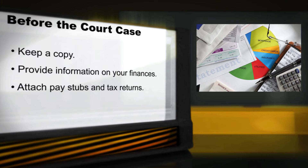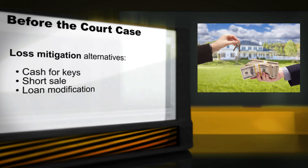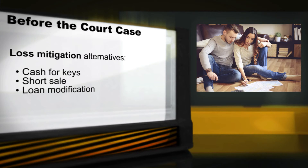Your lender will use this information to determine if you are eligible for a loan modification or other alternatives to foreclosure. The lender will contact you to discuss possible alternatives to foreclosure. Loss mitigation can include agreeing to move out in exchange for money — that is sometimes called cash for keys. Or it might include the bank allowing you to sell your home for less than you owe — that is often called a short sale. Keep in mind that there is no guarantee that you will get a loan modification or other alternatives.